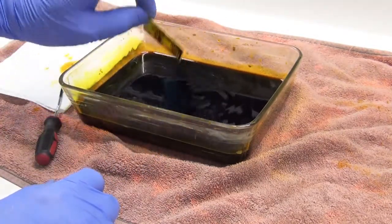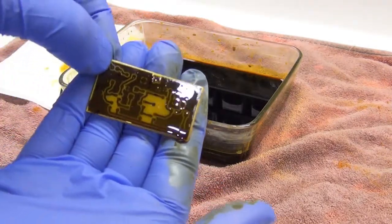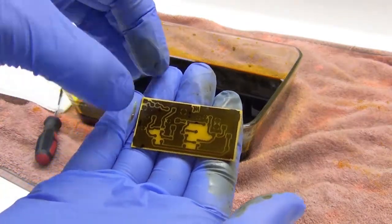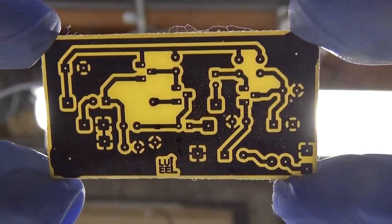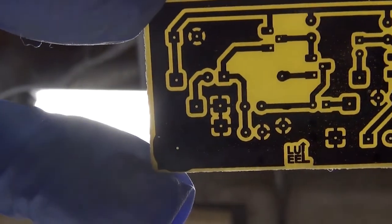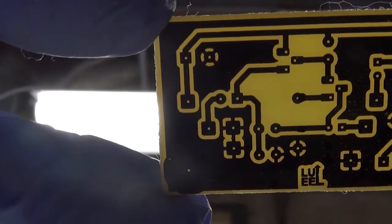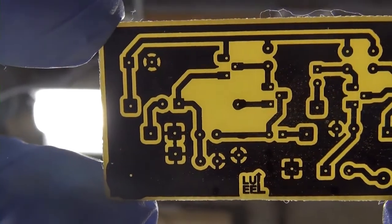You need to check it periodically to see when it's done. And you can tell when it's finished, of course, when any of the copper that wasn't covered by the toner transfer is etched away. And as you can see here, you shine a light through it. In this case, it's a single-sided board. It's very easy to see when it's done. You won't see any areas of bare copper or the light will come through translucently and you'll know you've got a finished board.